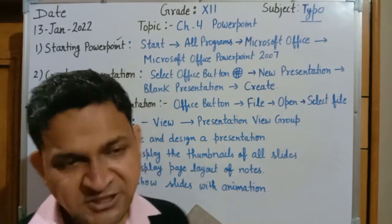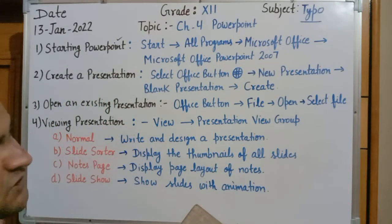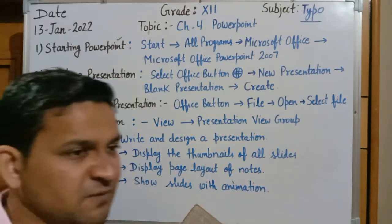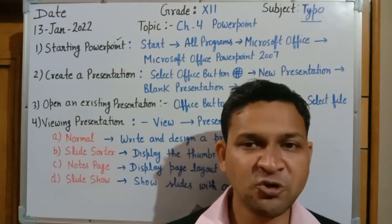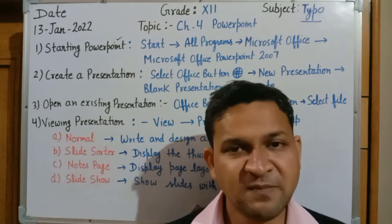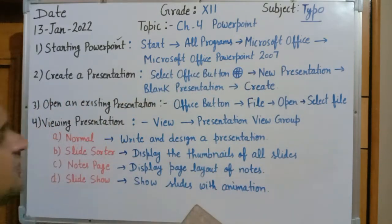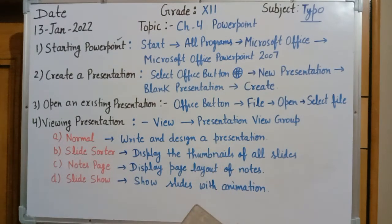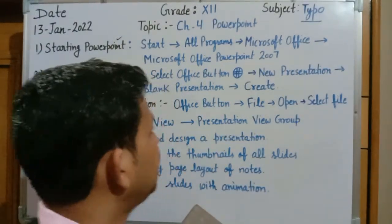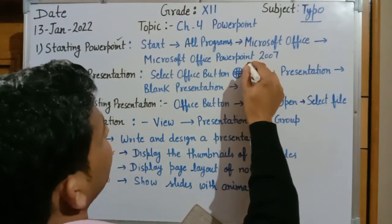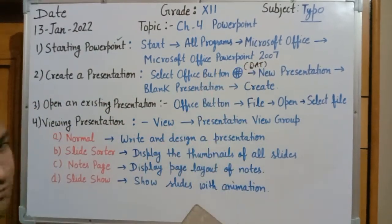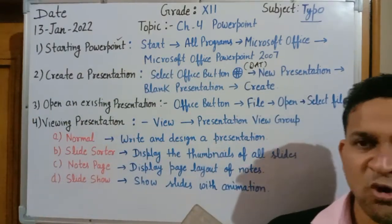To make a presentation we need to open a new file. Step one: select the Office button. The Office button is present on the top left corner of your screen, just below the title bar. It is the first button on your PowerPoint screen, just before the Save and Undo options, near the Quick Access Toolbar.